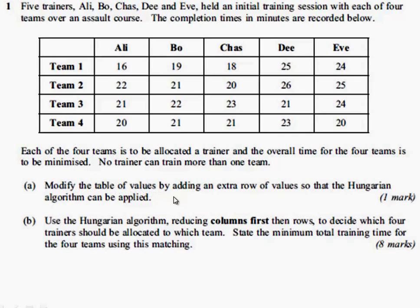In the first part of the question we're asked to modify the table in order to apply the Hungarian algorithm. Having done that, we're then asked to reduce columns first and work through the algorithm to find the minimum total training time.